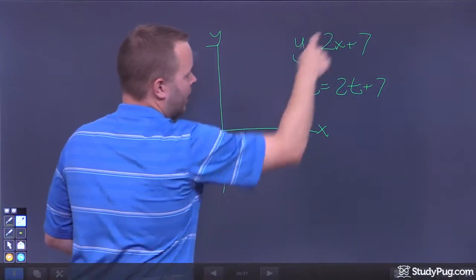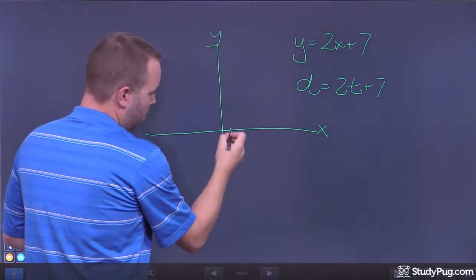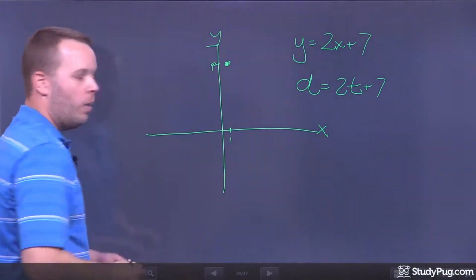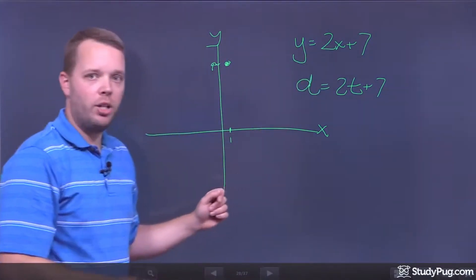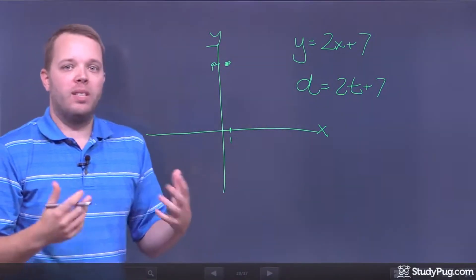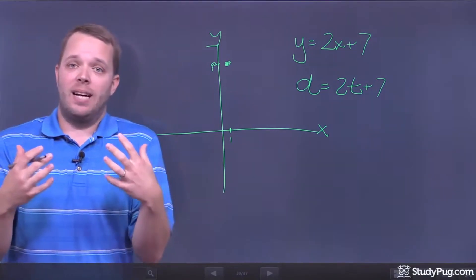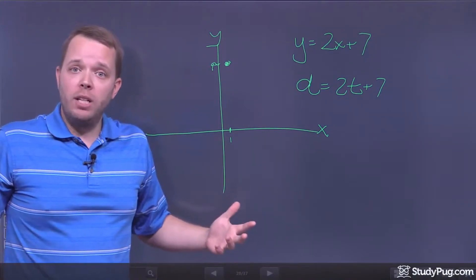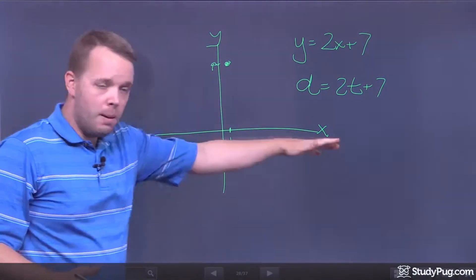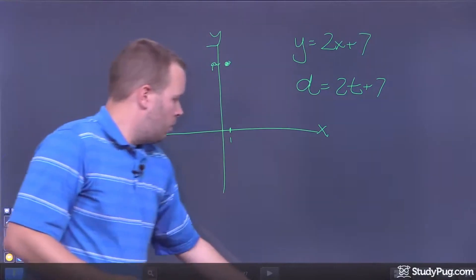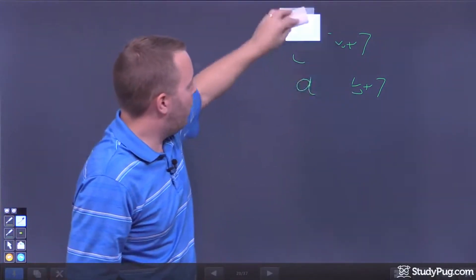At a function input of 1, the value is 9, because when I put 1 into the equation, the equation outputs 9. Domain and range allow us to separate inputs from outputs. Domain talks about strictly inputs, and range talks about strictly outputs, or function values. Let's take a look at a couple of pictures and see what happens.